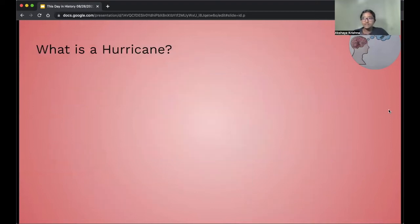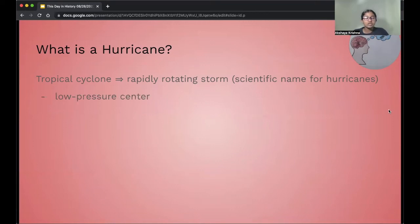Now let's go into what is a hurricane. We looked at Hurricane Katrina, the damage that it did, and some stats, and basically the timeline. But what exactly is a hurricane? A hurricane is a tropical cyclone. A tropical cyclone is a rapidly rotating storm, and the scientific name for hurricanes is a tropical cyclone. A tropical cyclone has a low pressure center, but it has strong winds, and there's a spiral arrangement of thunderstorms. So note that these thunderstorms are in a spiral arrangement.